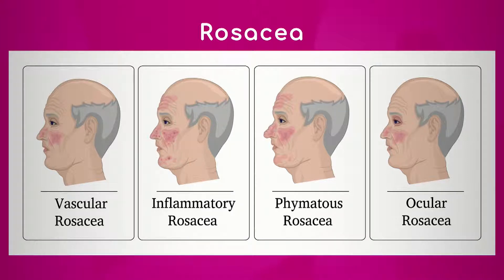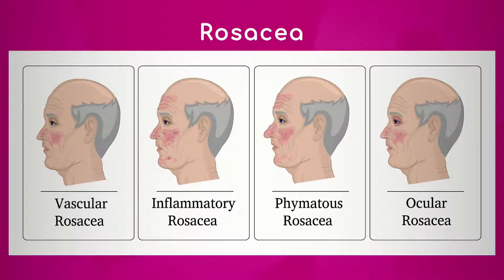Of all of these from left to right, which one would you say is the worst? The phymatous rosacea, for sure. Is that the hardest one to treat? The hardest one to manage — once that skin has already become deformed, you're looking at laser and surgical procedures to improve the texture of that skin. Very hard to manage.